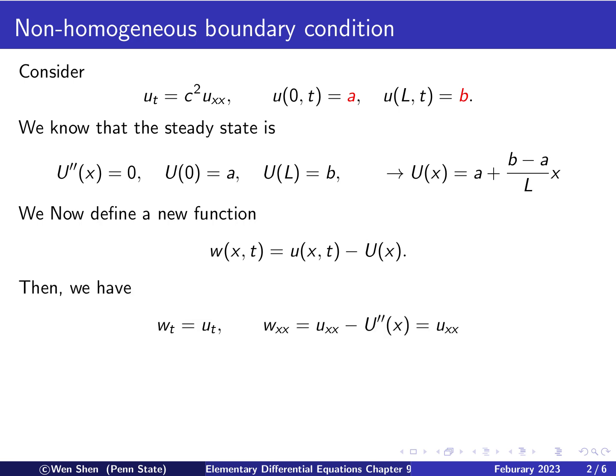Okay, so let's differentiate W. W differentiating with respect to t would just be u differentiating with respect to t because capital U doesn't depend on t. And then W_xx would just be u_xx and then capital U second derivative, and then this is zero because it's a steady state. Then we just have u_xx. Now remember u satisfies the heat equation, so you can replace u_t with W_t and u_xx with W_xx, and then you see that W actually solves the heat equation. So W solves the same equation as u.